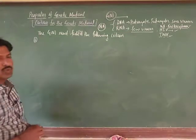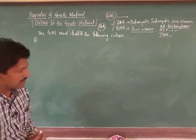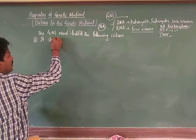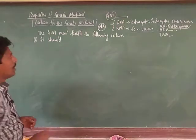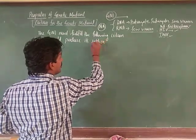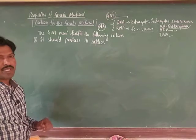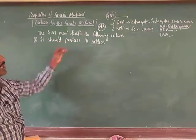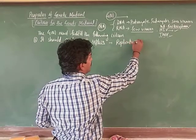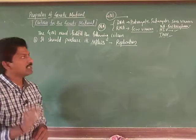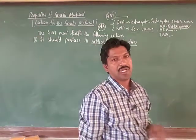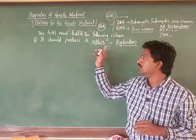The first criteria: it should be able to produce its replica — that is, its own copy. This phenomenon is also known as replication. The genetic material can duplicate itself, which is also called self-replication. So by the replication process, a DNA molecule produces two copies — parent template strands and new strands are formed.